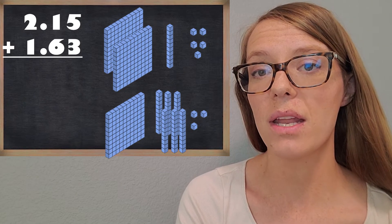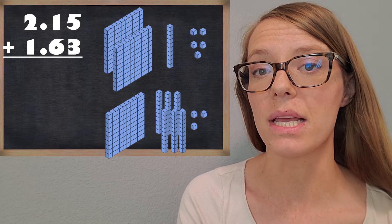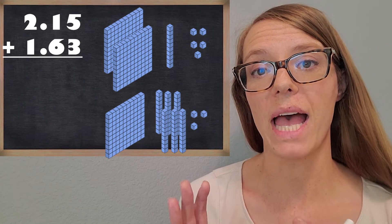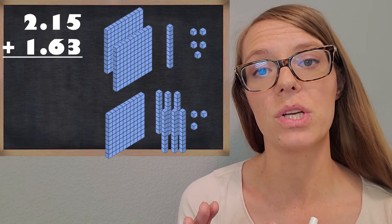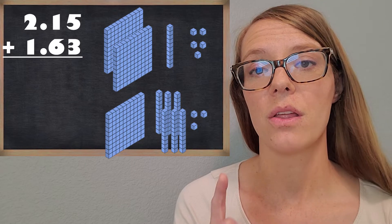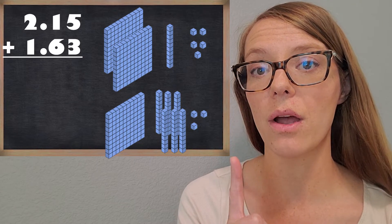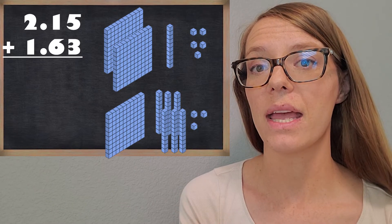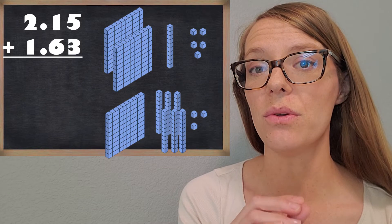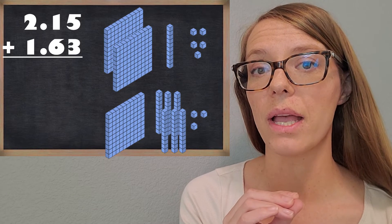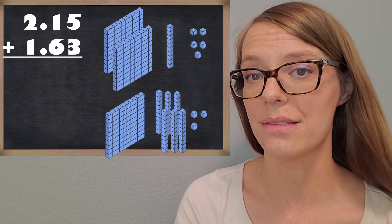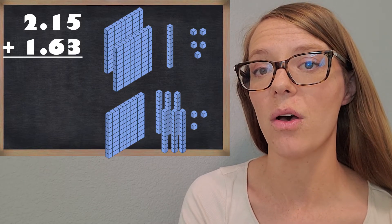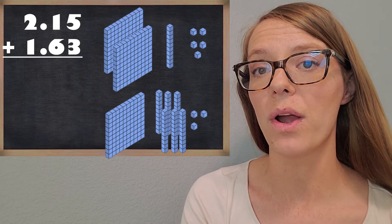You can kind of think of it as money. So the flat is one whole dollar. The longs are like our dimes. And the units are like our pennies. So that will really help us out while we're adding.